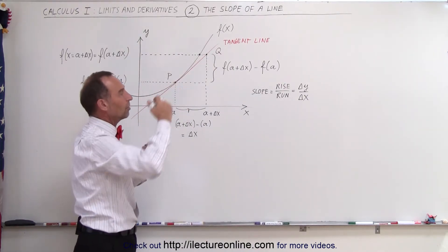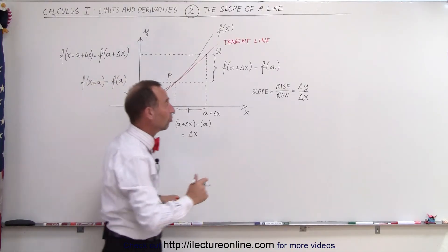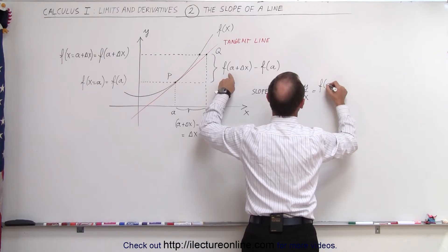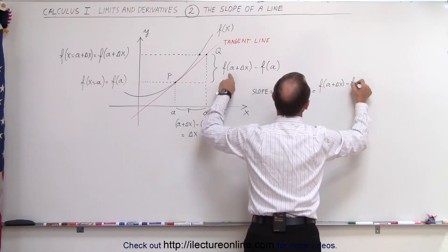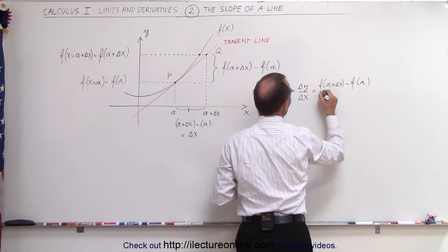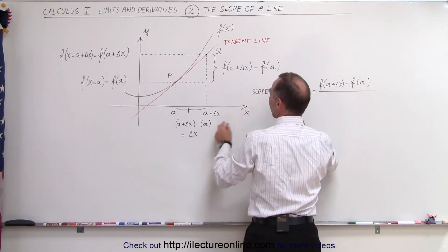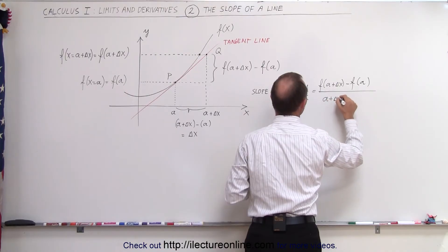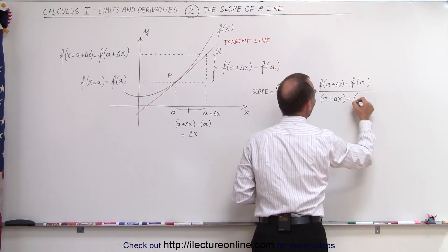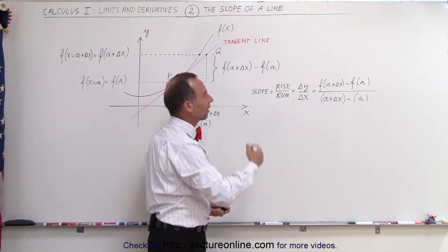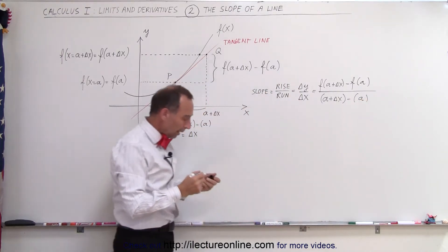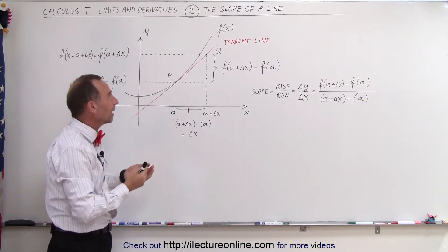That ratio will be equal to the slope. In this case, the change in y will be the function evaluated at A plus delta x minus the function evaluated at A — that is the change in the y direction. We divide that by the change in the x direction, which is A plus delta x minus x at the original location, and of course that again represents delta x. That's how we find the slope of the tangent line.